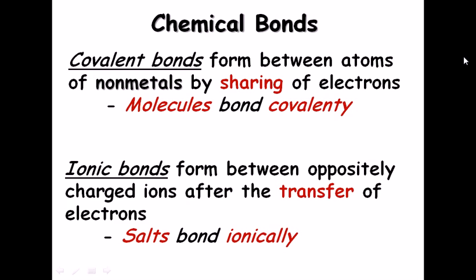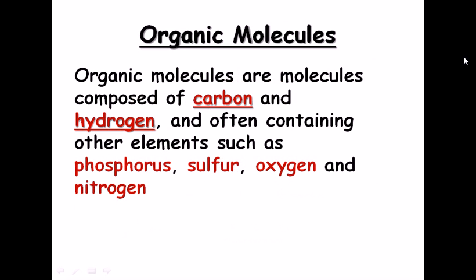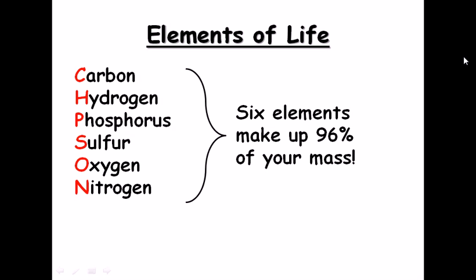Those are called ionic bonds. Now, organic molecules are molecules composed of carbon and hydrogen. Most of the time the framework of these organic molecules is made up of carbon and hydrogen, and often containing other elements such as phosphorus, sulfur, oxygen, and nitrogen.